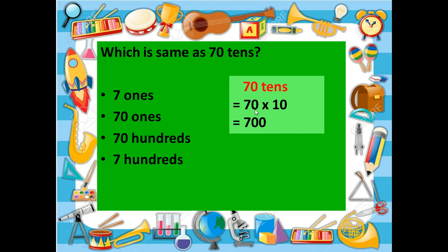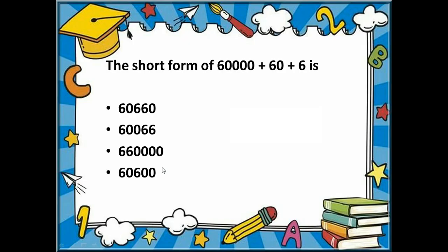The next question is: which is the same as seventy tens? Seventy tens can be written as 70 × 10, which equals 700. So the correct option is seven hundred — seventy tens equals seven hundred.